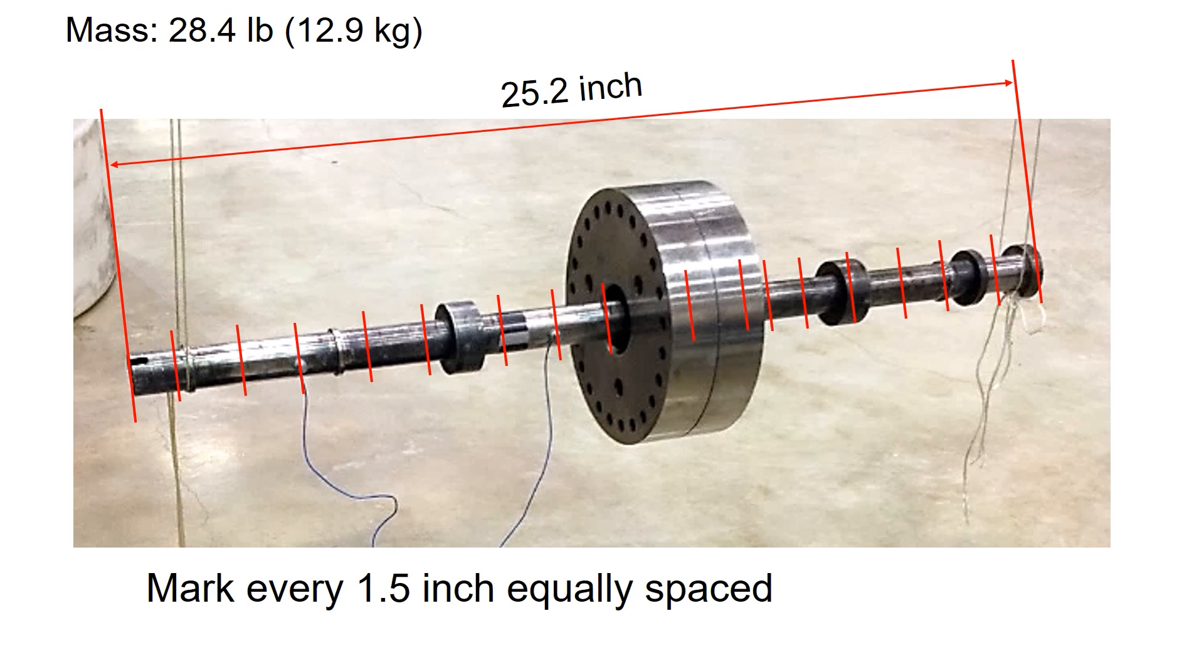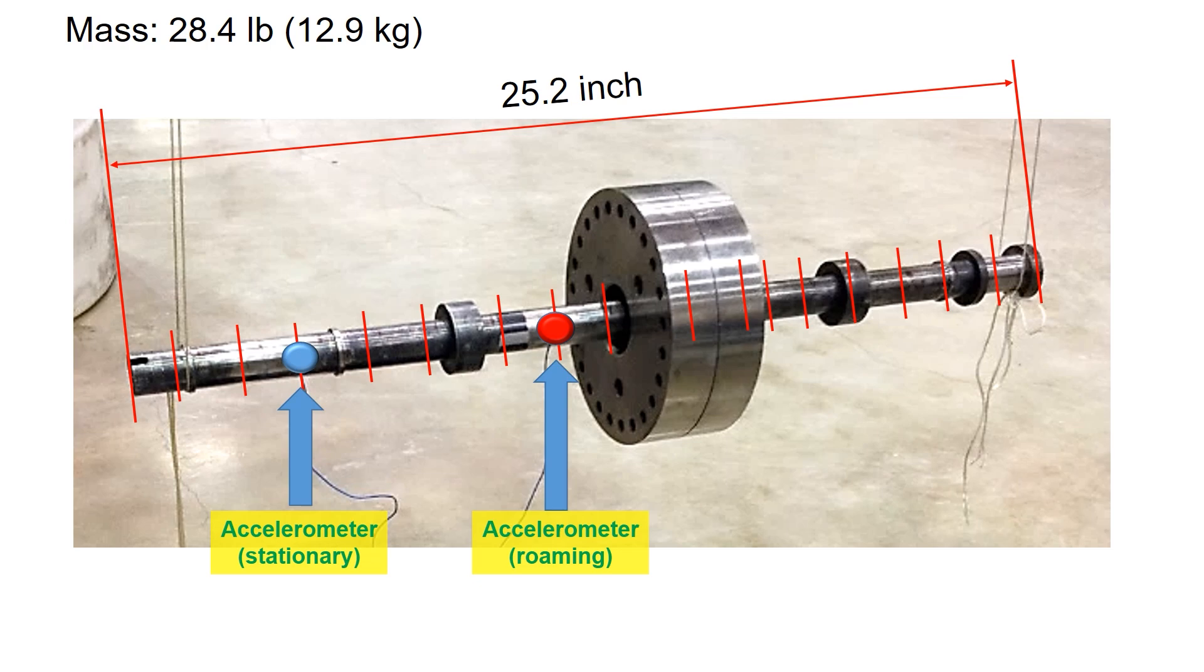Let's mark every 1.5 inches equally spaced along its entire length. Now attach two accelerometers on the rotor.